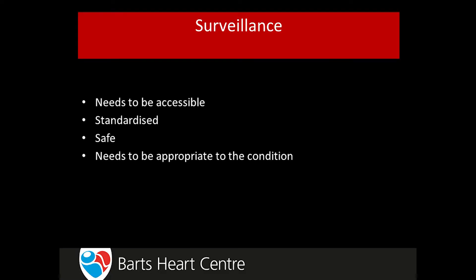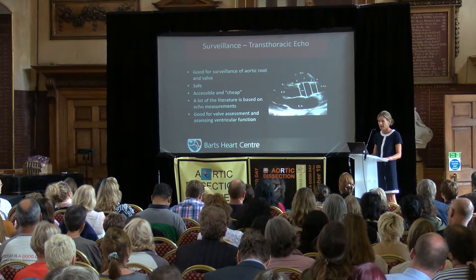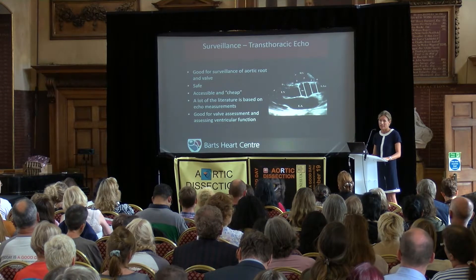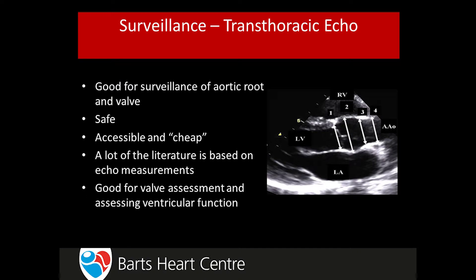In terms of ongoing surveillance, deciding how to investigate and follow our patients, we need a method that's accessible, with a standardized way of measuring — we're talking millimeters, so we need to put images next to each other and be quite confident about significant growth. We need a safe, cost-effective method appropriate to the patient's condition. An echocardiogram is how we have traditionally followed up patients, and much of the literature on aortic disease is based on echo measurements.